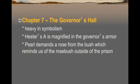In Chapter 7, we go to the Governor's Hall. We reintroduce the sense of Puritanism and male-dominant leadership. Hester's A is magnified in the Governor's armor, which has been carefully polished and set on display. Without mirrors in early Puritan times, when Hester can finally see a reflection of herself — a young beautiful woman with a young beautiful little girl — all she can see is her A being magnified and enlarged in the armor. Pearl demands a rose from the bush outside, reminding us of the rosebush outside the prison and again evoking that sense of beauty and pain.